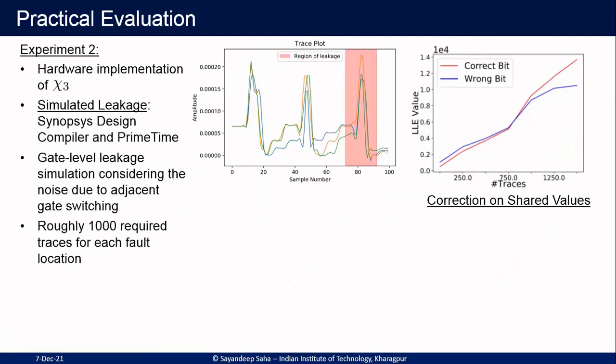In another experiment, we performed a simulated evaluation on a hardware setup. It is worth mentioning that the software setup discussed previously can also be tuned for hardware systems in some cases. In this experiment, we simulated the faults and the power side-channel leakage. The main question was whether, with adjacent gate leakages, we can still discover the side-channel signal we are looking for. The answer is yes, and we see that with roughly 1,000 traces, considering all kinds of noise present in the side channel, we can still recover the secret.